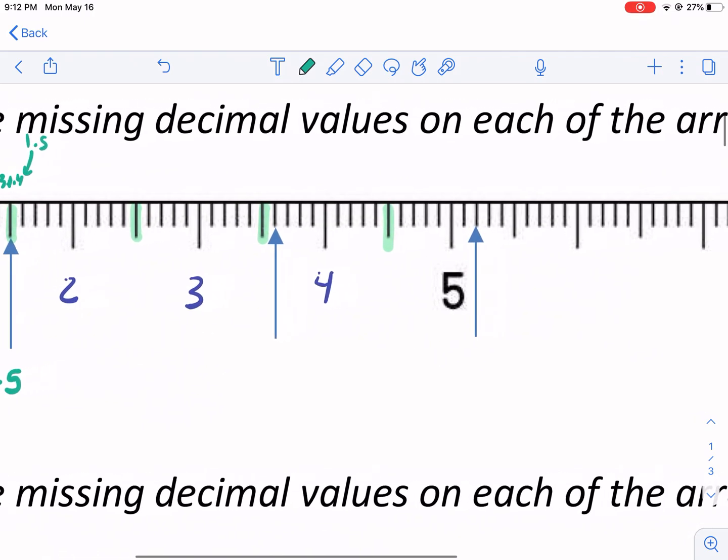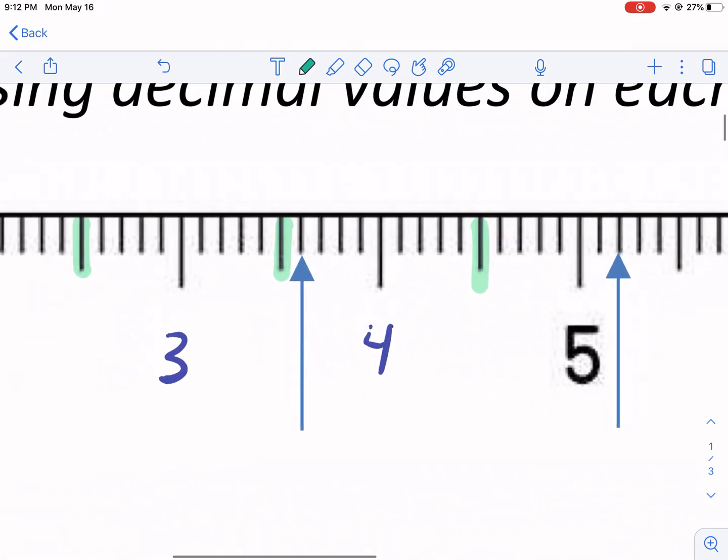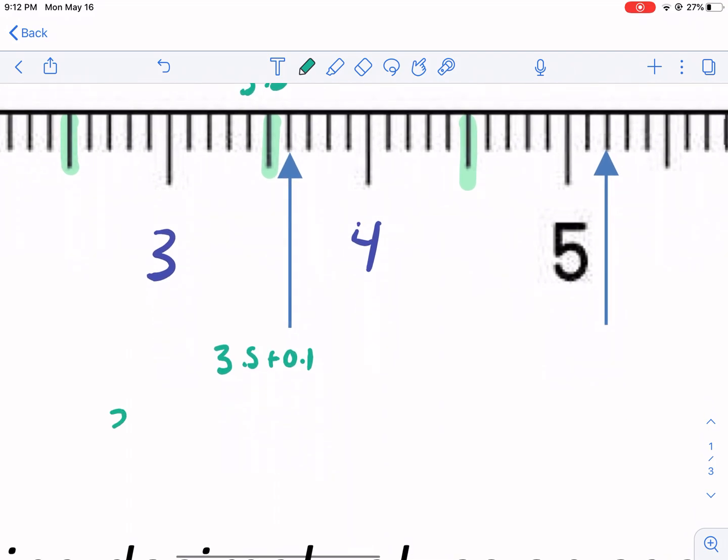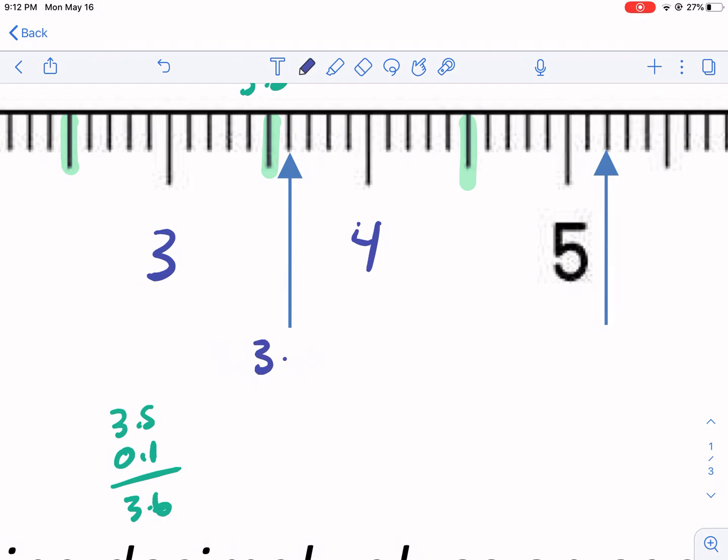So if it takes 10 marks to get to the next whole number, it's 0.1. 1 divided by 10 is 0.1. Five of those, 1.5. So that's how that works. The next arrow, let's look at the next one down the line. So it's not right on the halfway point, which is 3.5, by the way. It's a little bit past it. It's 1 tenth past it. So if it's one tick afterwards, you're gonna do 3.5 plus that 0.1. If you use your standard algorithm, it's just gonna be 3.6.